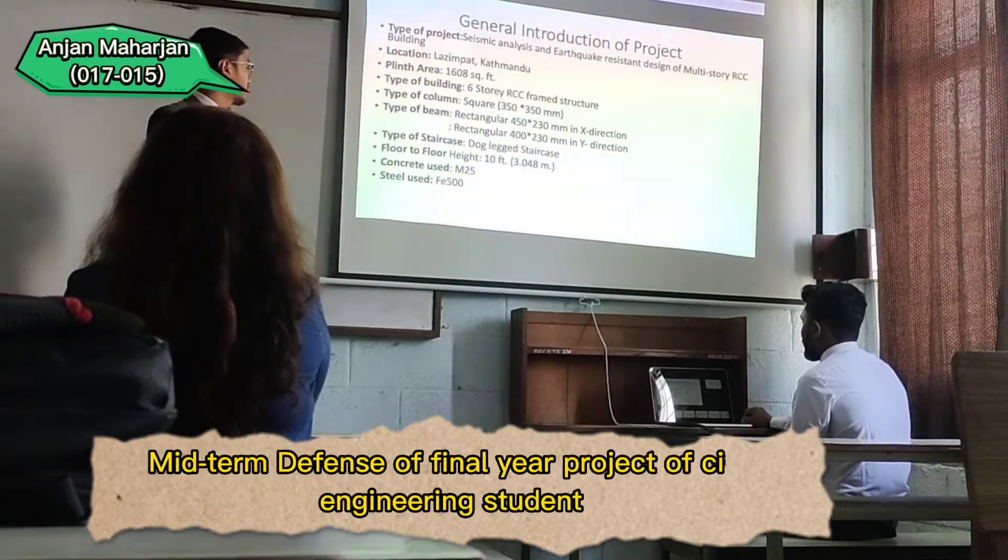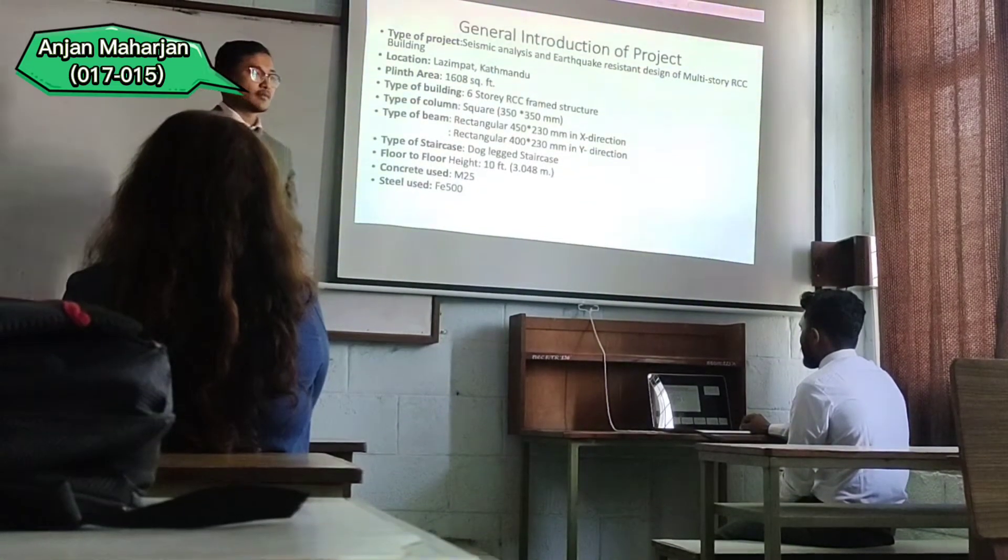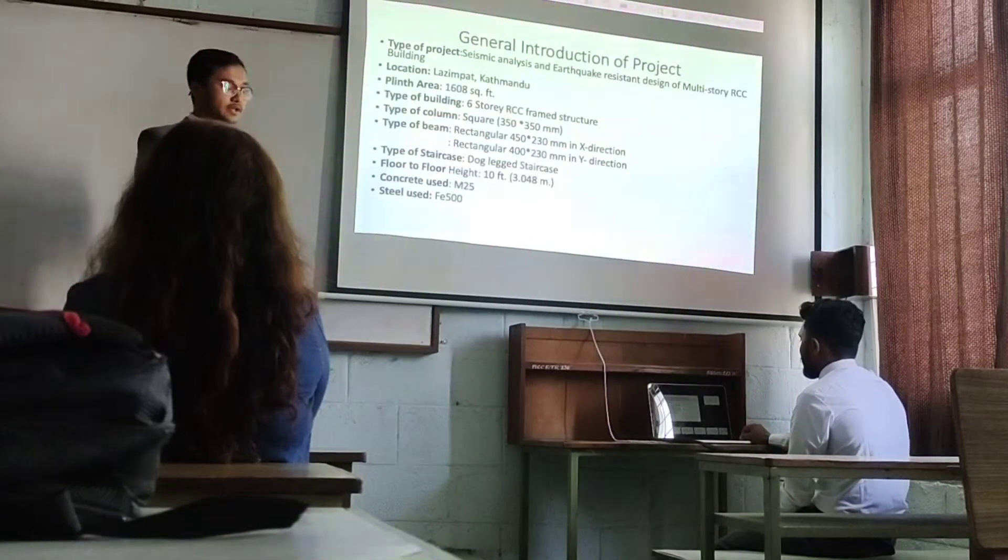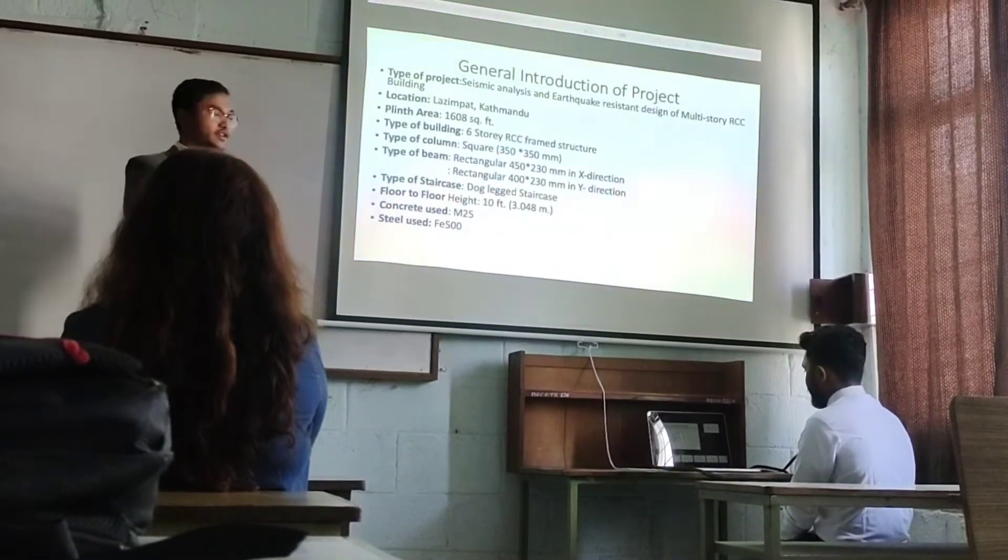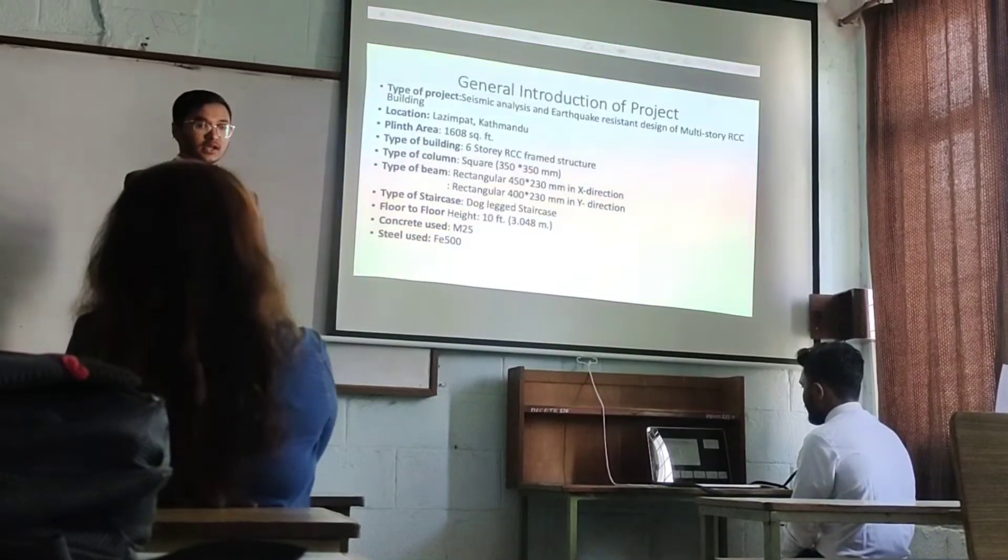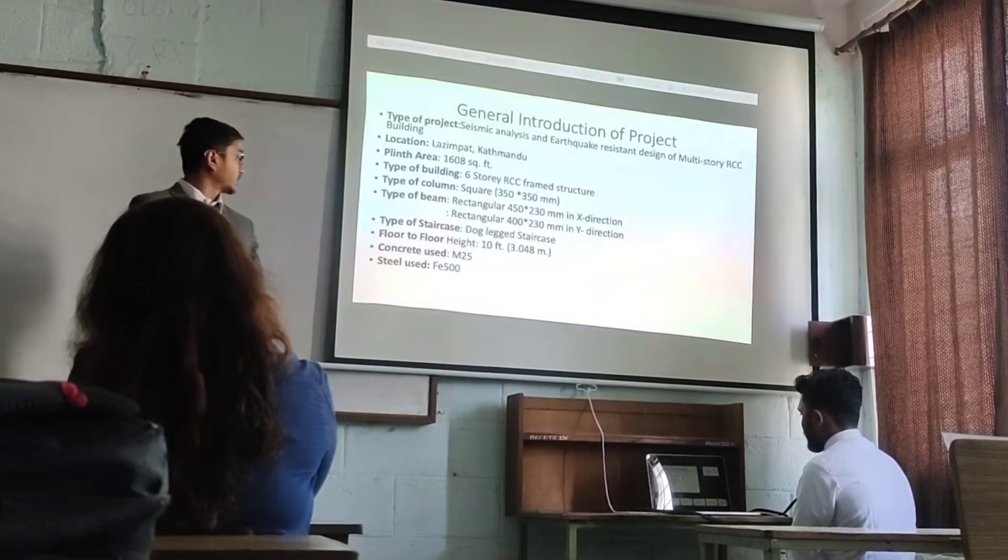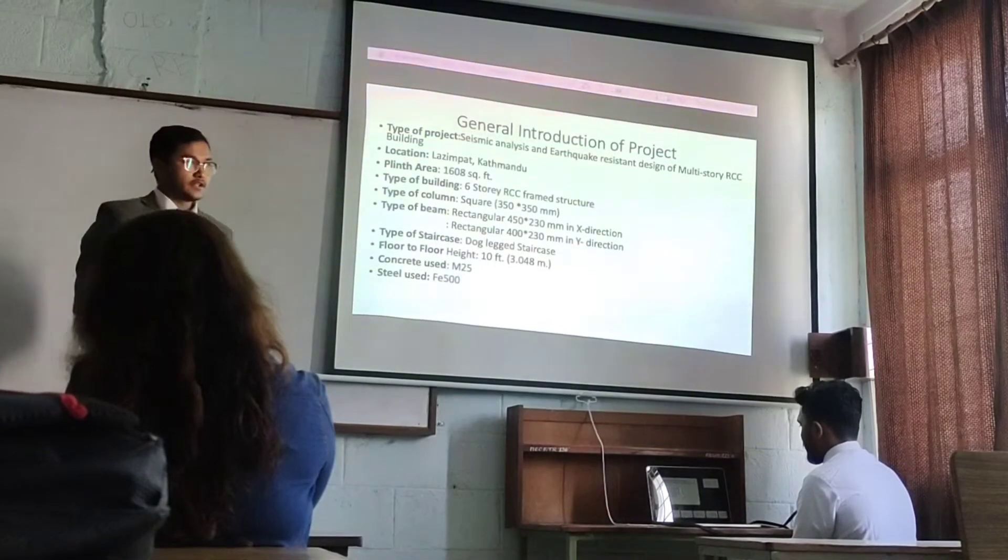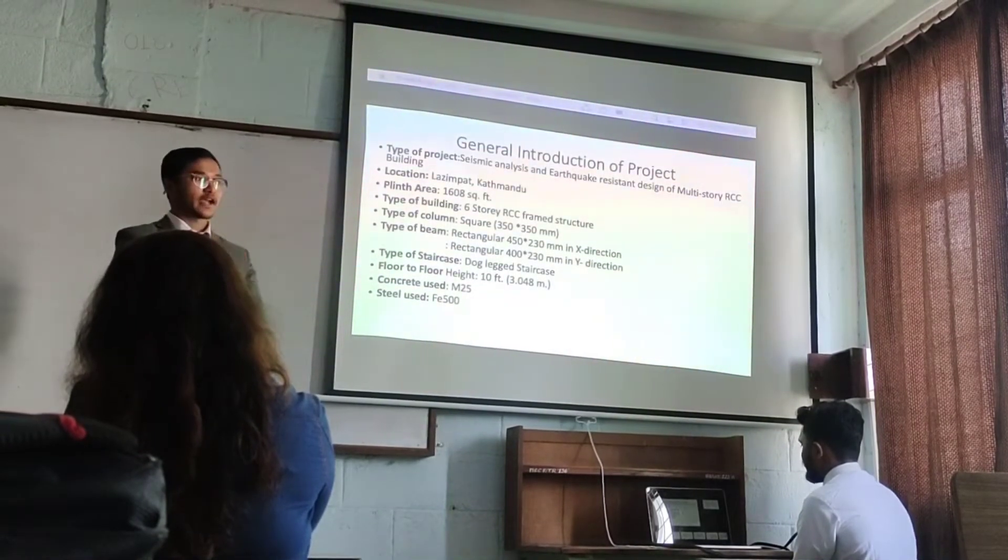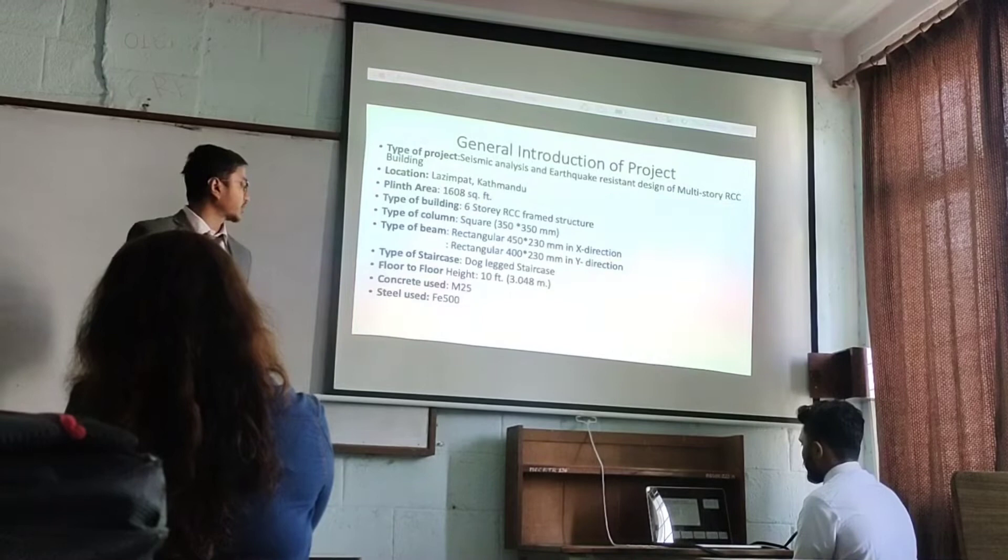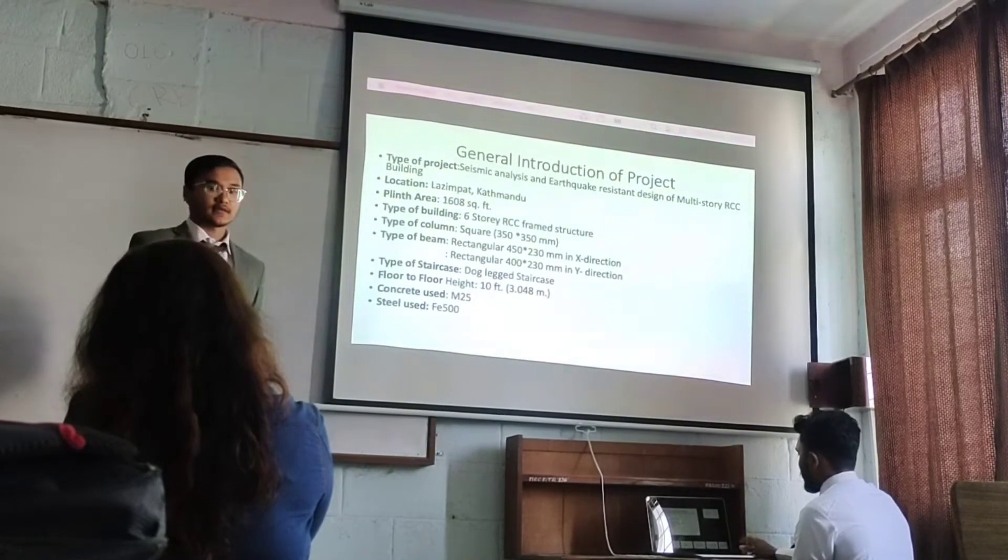Mid-term defense final year project of civil engineering. The building we are analyzing has a dual slab system. The floor height is 3.048 meters. The grade of concrete being used is M8, and the steel is E500.